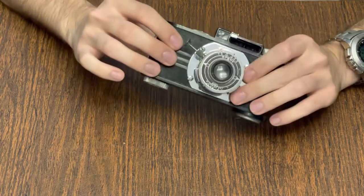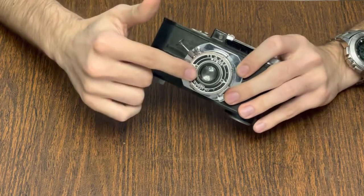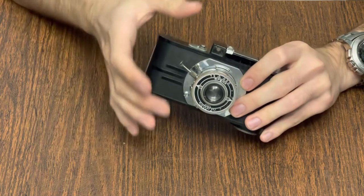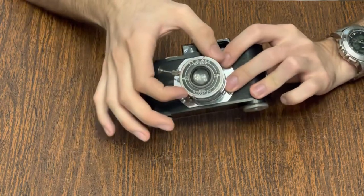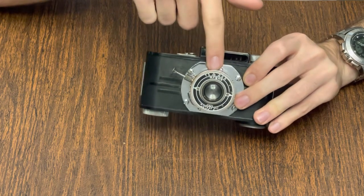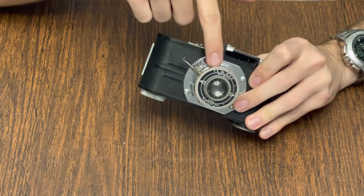The A2F is equipped with an uncoated 50mm f4.5 Argus Anastigmat lens which is a cooked triplet design mounted in an Ilex Precise shutter with speeds of 1/25th, 1/50th, 1/100th and 1/200th of a second plus bulb and time modes.